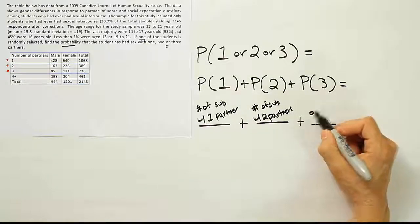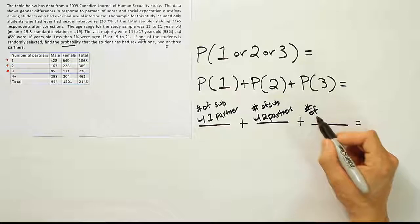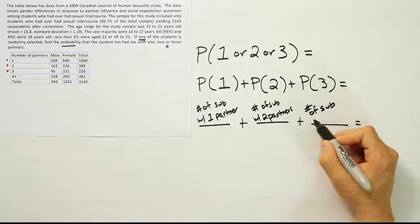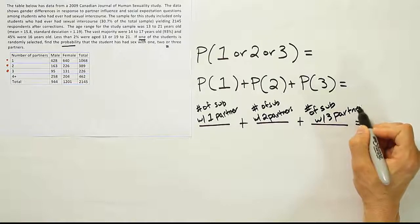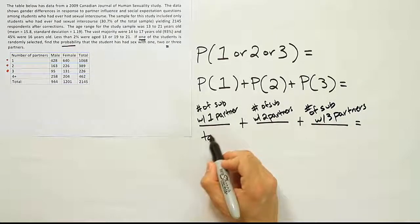And finally, number of subjects with three partners. All of these are going to be over the total.